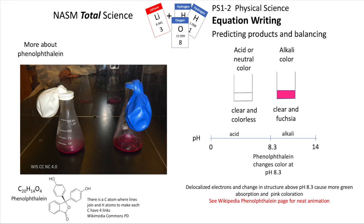A little bit more about phenolphthalein. The acid or neutral color of phenolphthalein is clear and colorless. With an alkali present, it's clear and fuchsia—you can see through it, it's still transparent. For phenolphthalein, the actual change is at pH 8.3, not at exact neutral. In the bottom left corner, you've got the formula and the structure. In red on the right hand side, you can see an animation of how the colors change as the molecule itself changes.